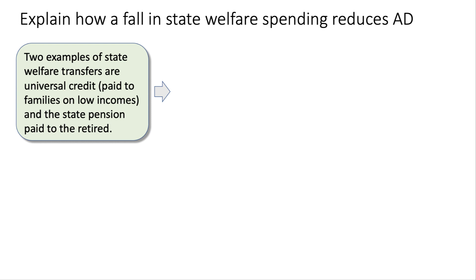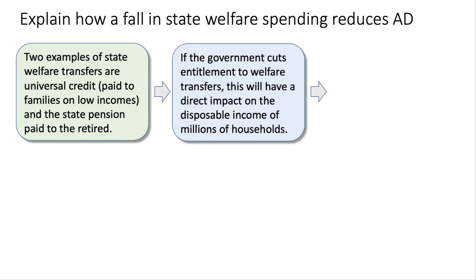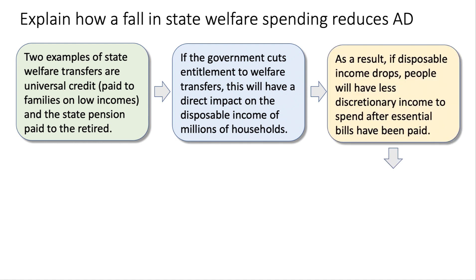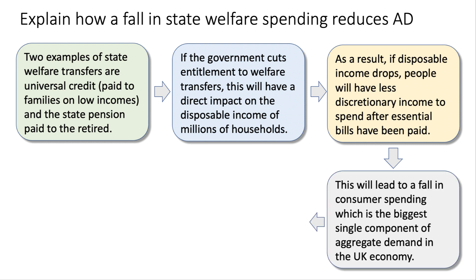Two examples of welfare would be universal credit paid to families on below-average incomes, and the state pension to those who have retired. If the government cuts entitlement to welfare, this will have a direct impact on the disposable income of millions of households. Disposable income is income after tax and welfare, so if disposable income drops, people will have less discretionary income to spend after they've paid their bills.